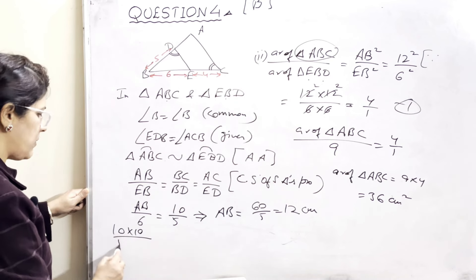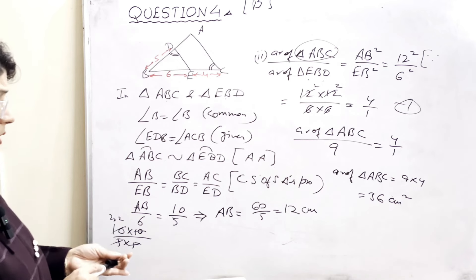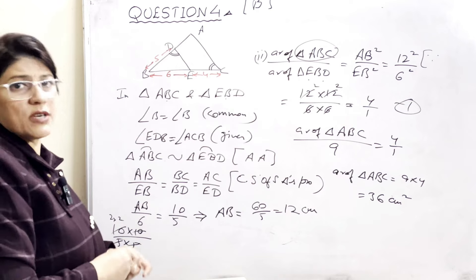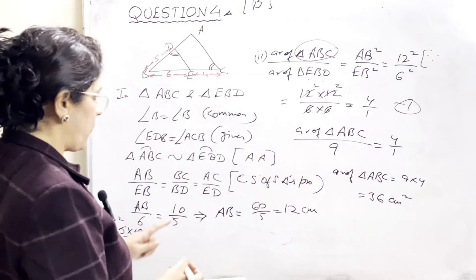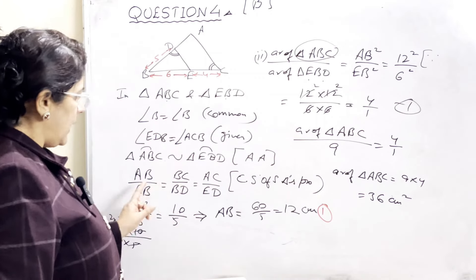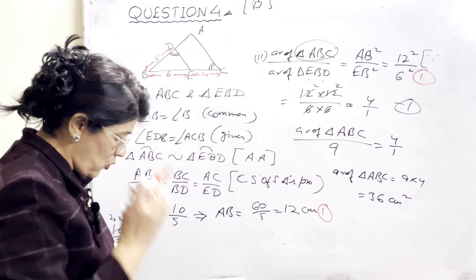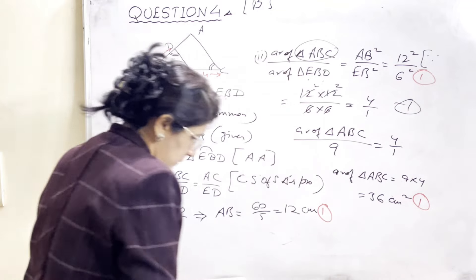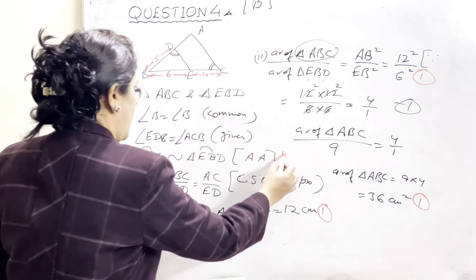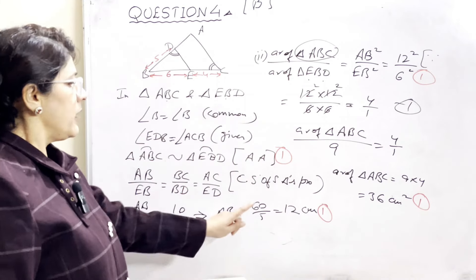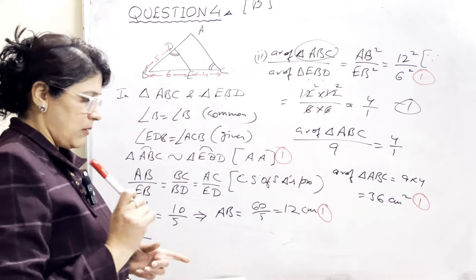Marking scheme: pehla mark jab aap 12 cm calculate kar lenge (cross multiply se). Doosra mark corresponding side ka square show karne par. Teesra mark 36 cm² nikalne ka. Aur yeh 4 marks ka question hai — pehla mark similarity proof karne ka, ek length nikalne ka, ek area theorem likhne ka, aur last mein area sahi aane ka. Yeh 4 marks ki bifurcation ho jayegi.